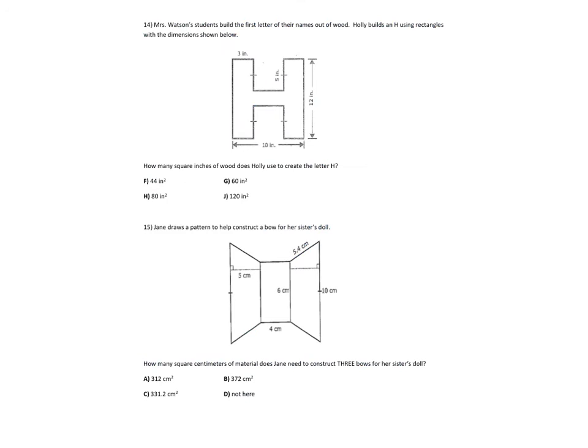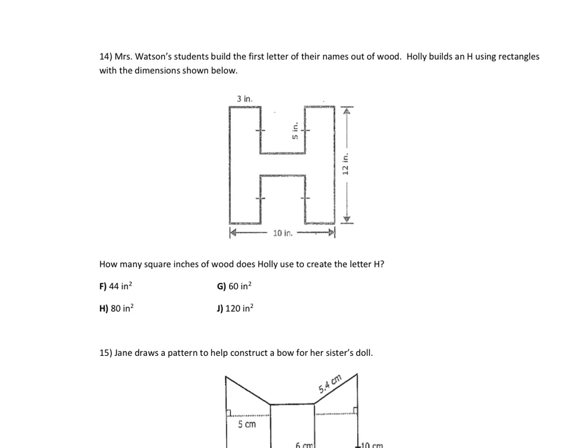Number 14. Ms. Watson students built the first letter of their names out of wood. Holly builds an H using rectangles. How many square inches of wood does Holly use? I would do it piece by piece. I would do it into three sections like this. You could do the whole rectangle and then subtract out the two sections. But I would do 3 times 12, which is 36. And I know 36 is here too. And then I would do what this shape is, which is this is 5 and this is 5. So this is 2. This is 3 and 3. So this is 4. So 2 times 4 is 8. So 36 plus 36 plus 8 is 80 total, which is answer choice H.